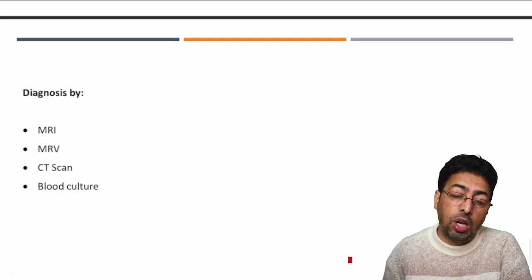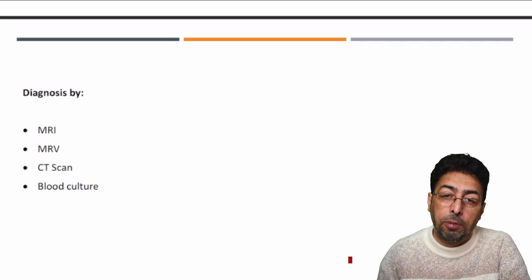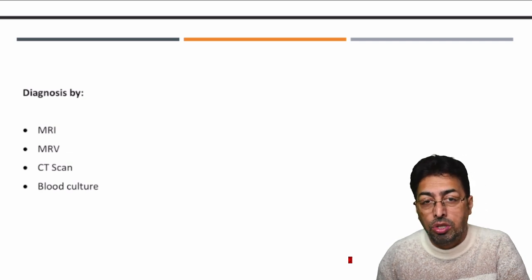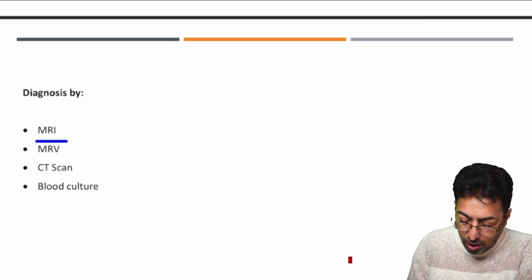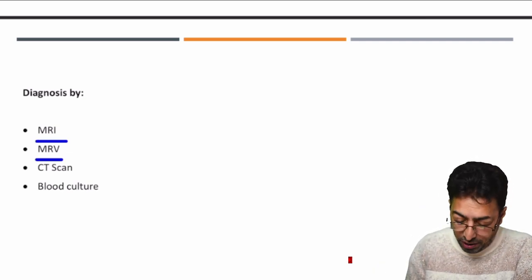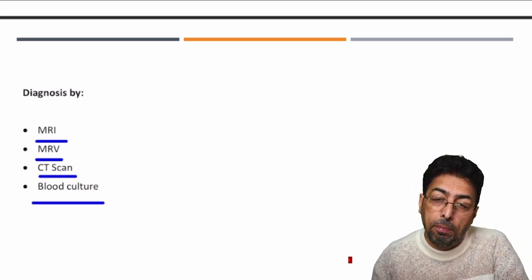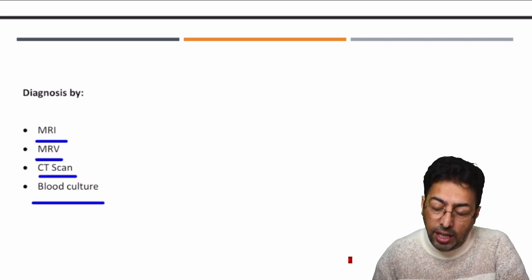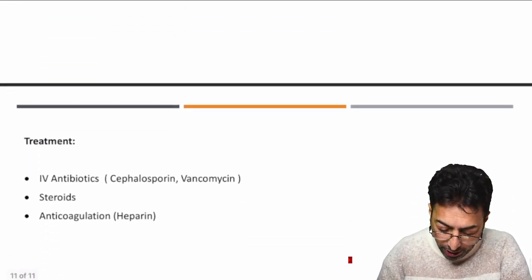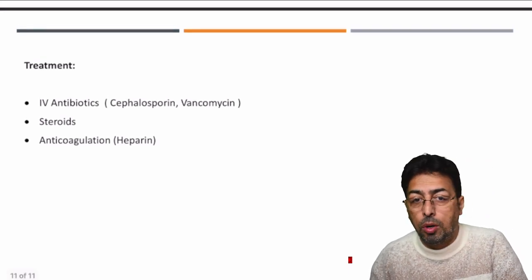Experts diagnose cavernous sinus thrombosis using multiple diagnostic techniques in addition to history and clinical presentation. These include MRI, magnetic resonance venography (MRV), CT scan, and blood cultures in some cases. These are supplemental diagnostic techniques to support the clinical diagnosis.